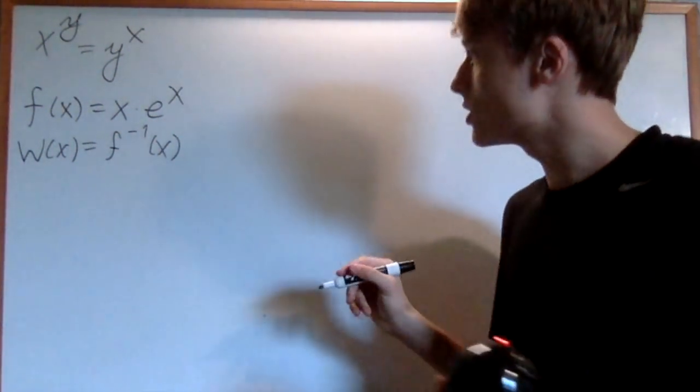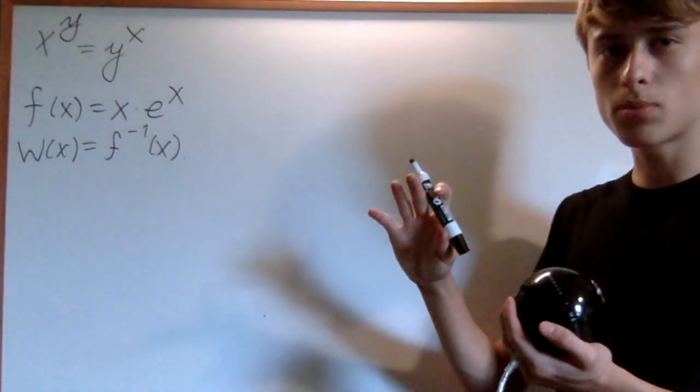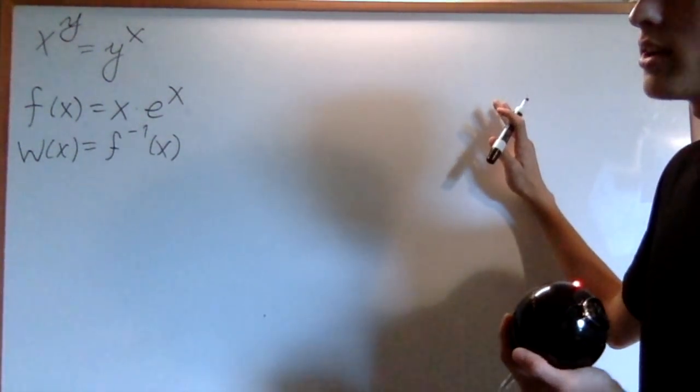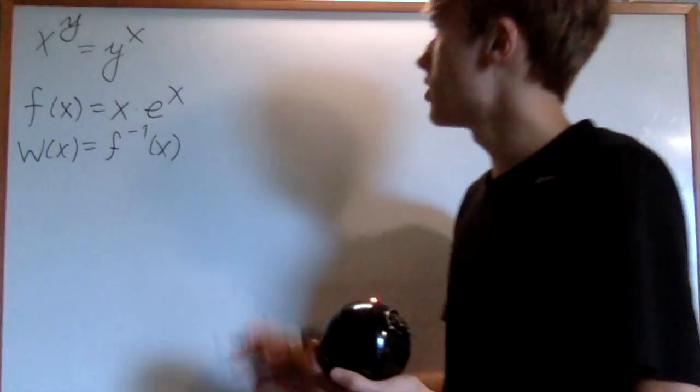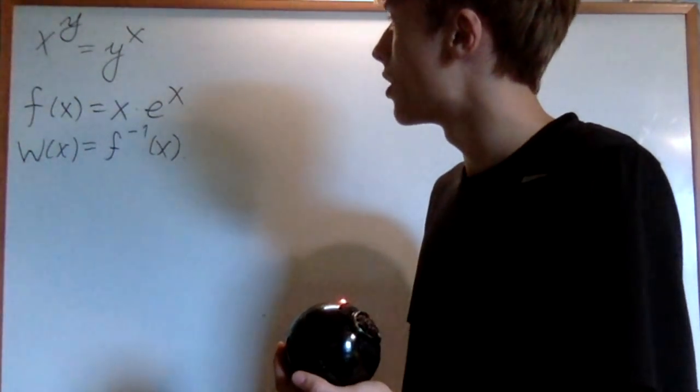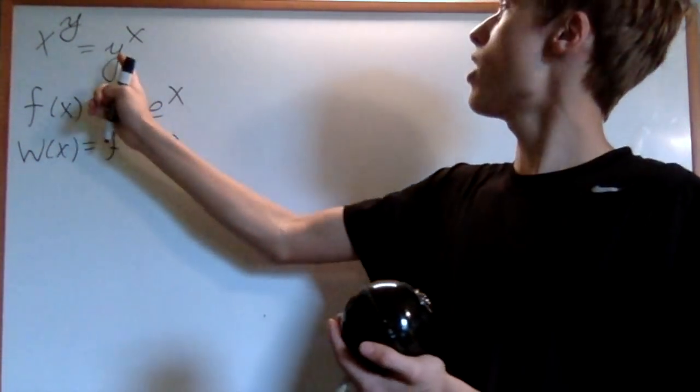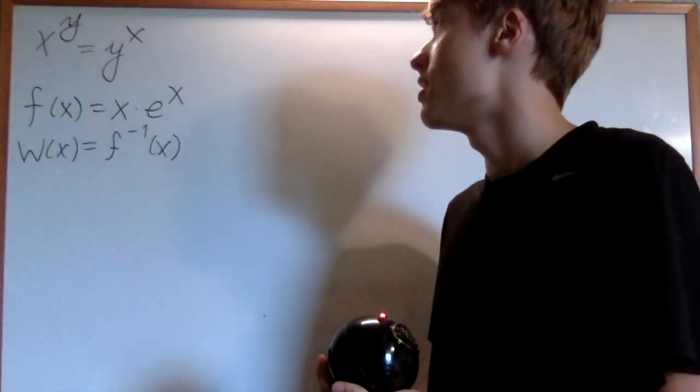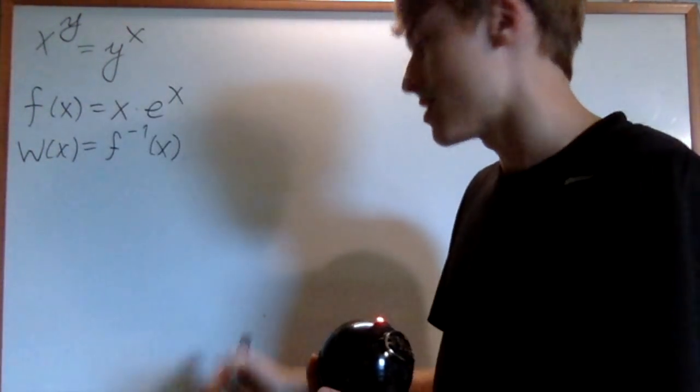And more specifically, what you want is to have one variable on one side. So let's try to do that. Well, first of all, let's get one variable on one side. So let's get y on the right side, for instance.